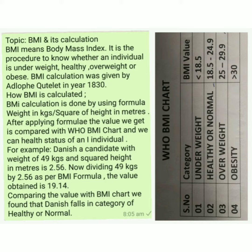BMI کے لئے ہم ایک formula کا استعمال کرتے ہیں جس میں ایک individual کا weight ہم kilograms میں measure کرتے ہیں اور اس کی height meters میں measure کرنی پڑتی ہے۔ Height کی value کو square کرنا پڑتا ہے، اور پھر weight کو اس square of height سے divide کرتے ہیں — اس طرح ہمیں BMI کی value ملتی ہے۔